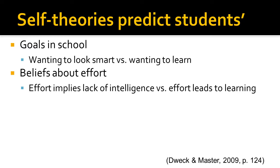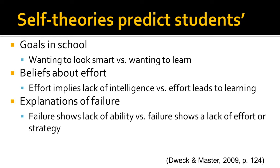Students with changeable views of intelligence aren't as likely to think this way. They believe that effort leads to learning and that they need to put forth effort in order to learn more. Self-theories also predict students' explanations of failure. Students with fixed views believe that failure shows a lack of ability — if they don't do well, it must be because they don't have the intelligence or natural ability. Students with changeable views of intelligence believe that failure shows a lack of effort or strategy. When they don't do well, they try harder or try to find other strategies to do better.